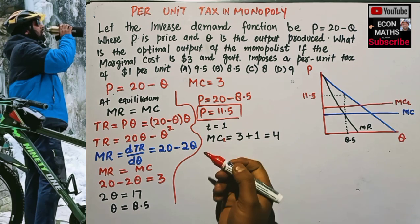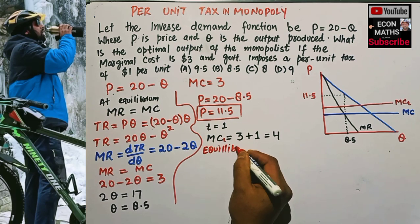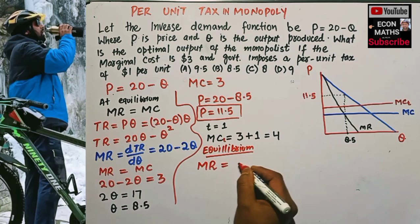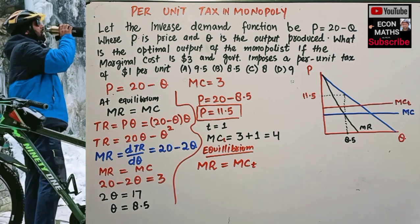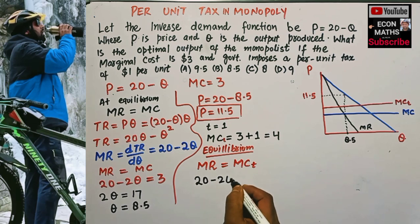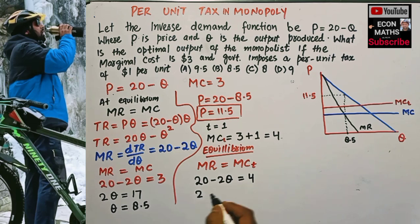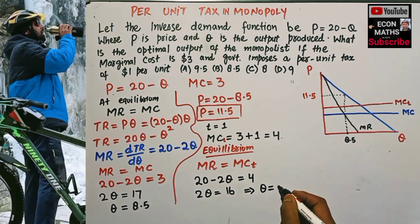Equilibrium again requires that marginal revenue equals the new marginal cost with tax. Our marginal revenue function is 20 minus 2q, and our new marginal cost is $4. Equating: 20 minus 2q = 4, so 2q = 16, which gives us equilibrium output = 16/2 = 8.